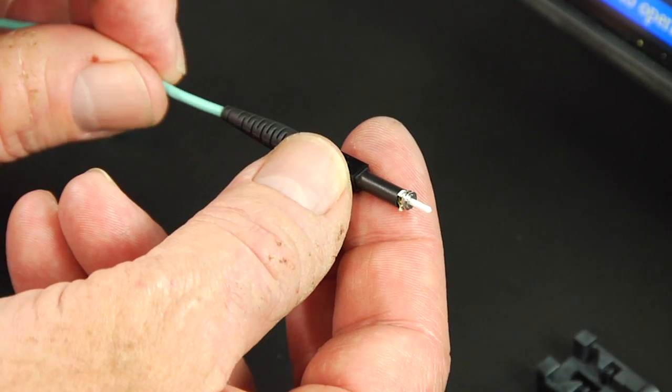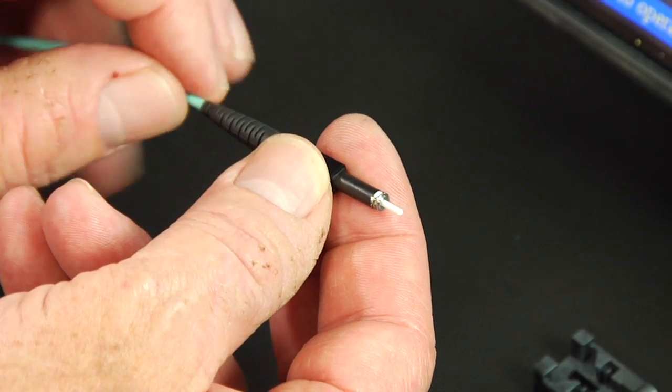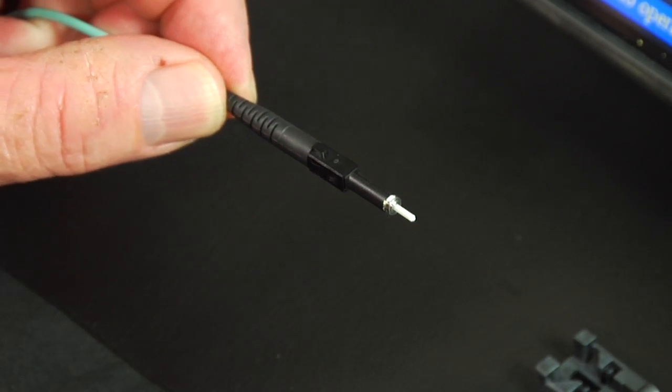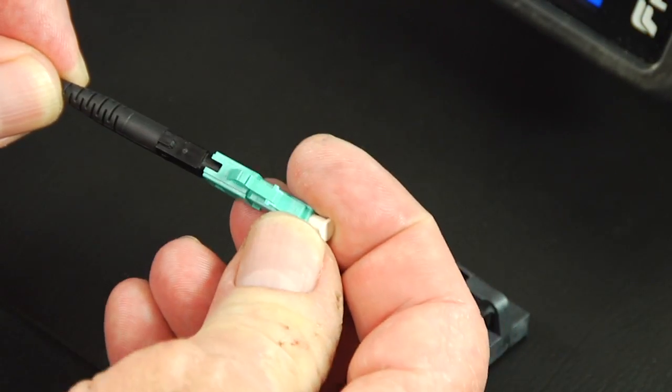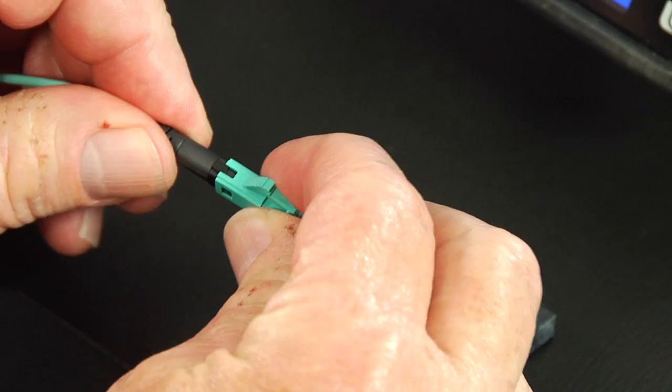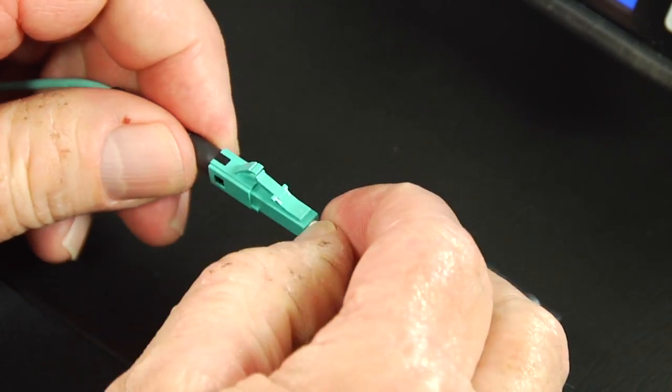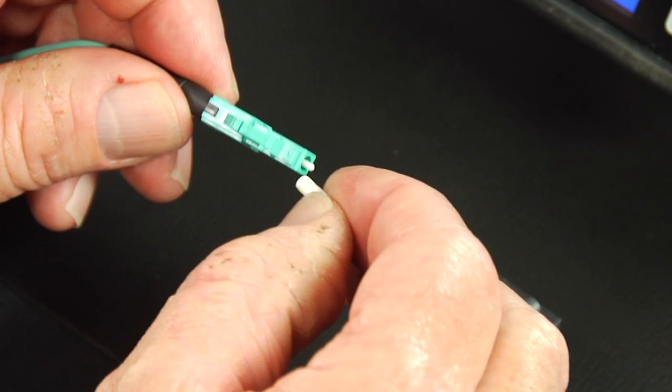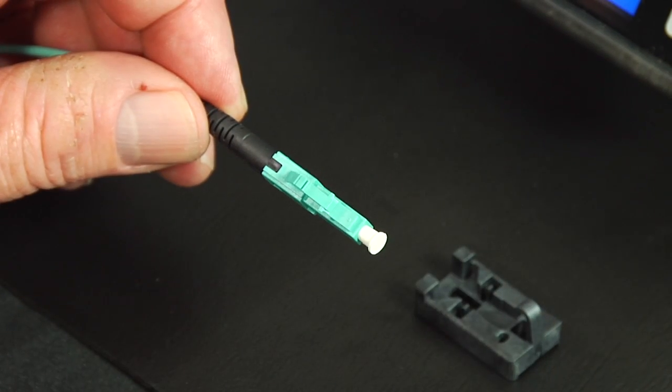Slide the 2 millimeter boot over the protective sleeve and snap onto the connector. Check bevel for proper orientation and install the connector housing onto the connector assembly from the front. Termination complete.